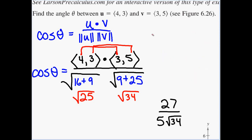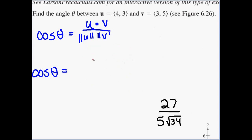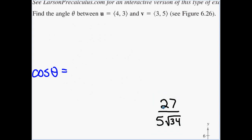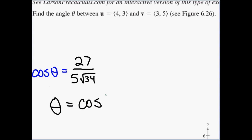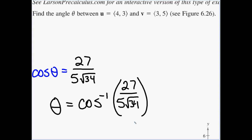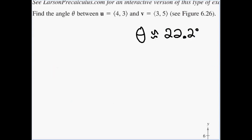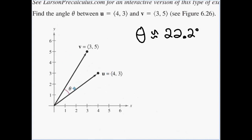Taking the inverse cosine: theta equals cos inverse of twenty-seven over five root thirty-four. Plugging into the calculator in degree mode, we get theta is approximately 22.2 degrees. And bringing back the graph, that's a pretty reasonable answer — we estimated it was definitely less than 90 and even less than 45, so 22.2 degrees checks out.